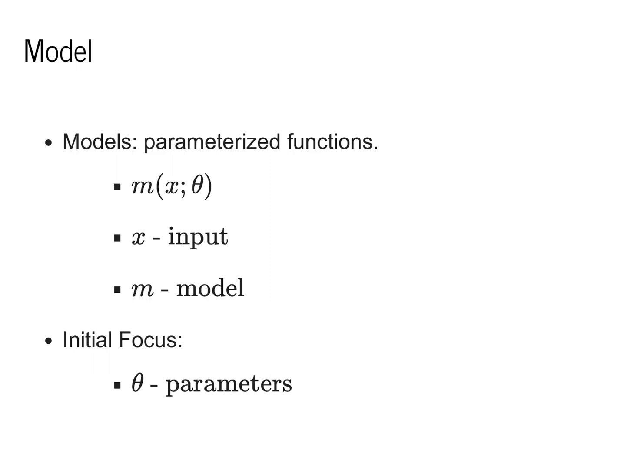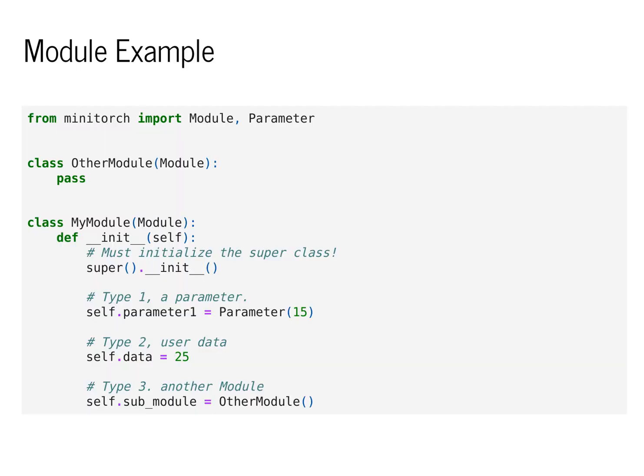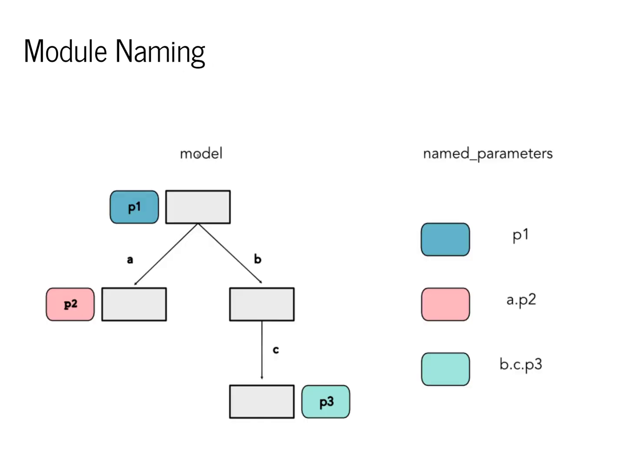Which gave us a declarative tree that represented all the parameters in a model. Practically, we implemented these by overriding the module class in Python and defining parameters and submodules. Together, this formed a module tree where every one of the parameters had a clear and well-defined name.